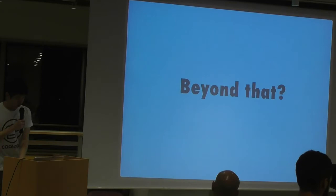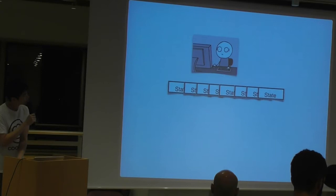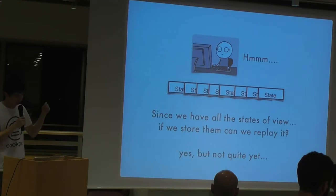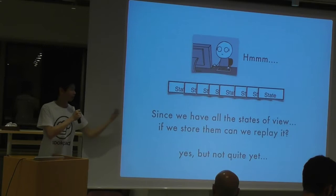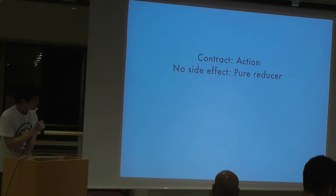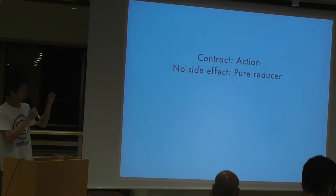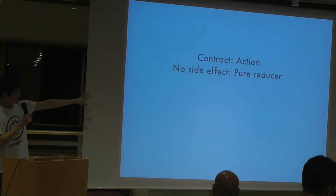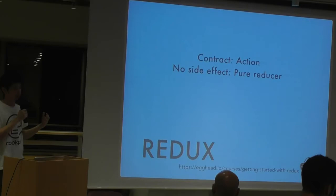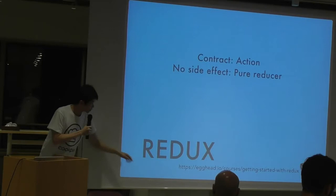What's beyond that? Can we do even more? Let's say we have a series of states. Since we have all the states, if we save all of them, can we replay them back and forth? The answer is yes, but it's not quite yet — we need a contract. We need to limit the ways we mutate the view model, and we need to make sure there's no side effect. If this is foreign to you, that's fine, because this is the concept of Redux. I myself am starting to learn this.